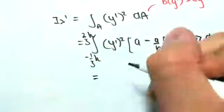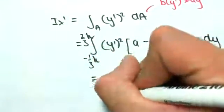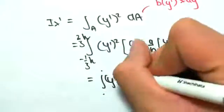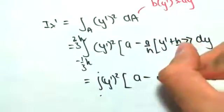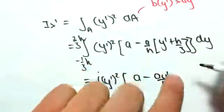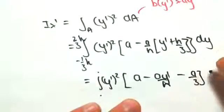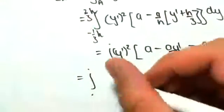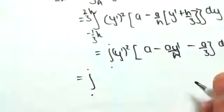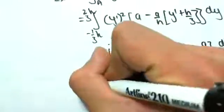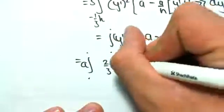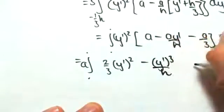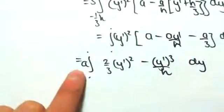Okay, so simplifying this, to make my life a bit simpler, I'm just not going to rewrite that, but that's what the endpoints are. I'm just doing a dot and dot. This is y dash squared outside of a minus ay dash on h, just expanding this out here, minus a on 3 dy, which is equal to the integral from those two points. So if you were to simplify all this, you would get 2/3. I'm going to put an a out the front because a is just a constant. So 2/3 y dash squared minus y dash cubed on h dy.